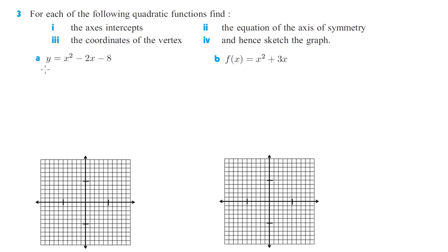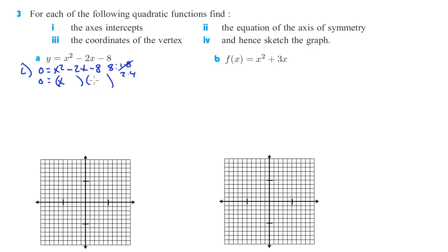For part A, we're finding the axes intercepts. To find the x-intercepts, we set y equal to 0. So 0 equals x squared minus 2x minus 8. We need to factor those out. Factors of 8 that have a difference of 2 — not 1 and 8, but 2 and 4. These have to add up to negative 2, so that would be negative 4 and positive 2. So x-intercepts are at x equals negative 2 and positive 4.